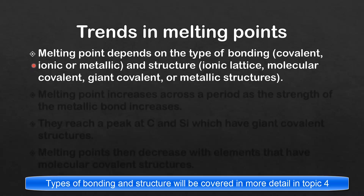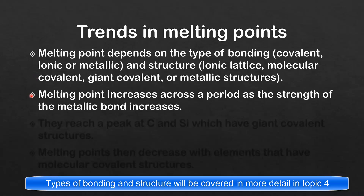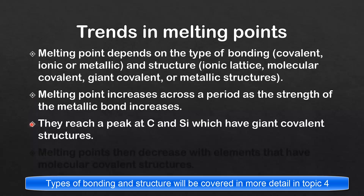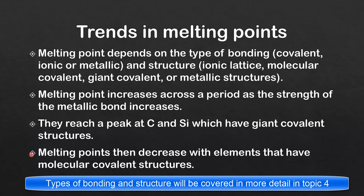Melting point depends on the type of bonding — covalent, ionic, or metallic — and the structure: ionic lattice, molecular covalent, giant covalent, or metallic. Melting point increases across a period as the strength of the metallic bond increases, as seen for lithium, beryllium, and boron. It reaches a peak at carbon and silicon, which have the highest melting points across a period due to their giant covalent structures. Melting points then decrease for elements with molecular covalent structures.